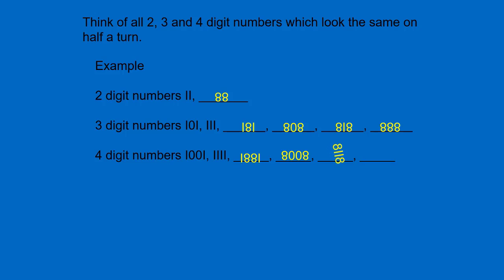8118 looks the same after half a turn. 8888 also looks the same after half a turn.